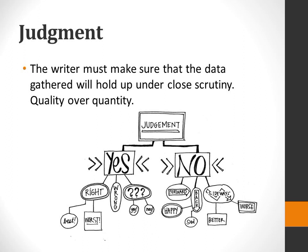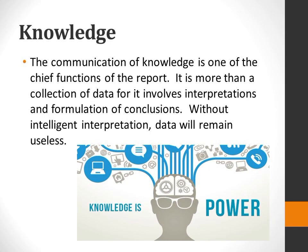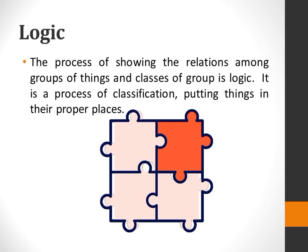J for Judgment: The writer must make sure that the data gathered will hold up under close scrutiny — quality over quantity. K for Knowledge: The communication of knowledge is one of the chief functions of the report. It is more than a collection of data, for it involves interpretations and formulation of conclusions. Without intelligent interpretation, data will remain useless.